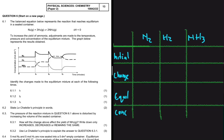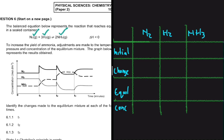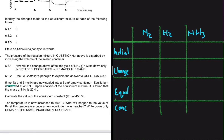We want to calculate Kc, the equilibrium constant, for a reaction between nitrogen gas and hydrogen gas to give us ammonia. The question reads: five moles of nitrogen gas and five moles of hydrogen gas are sealed in a five decimeter cubed empty container. Equilibrium is reached at 450 degrees Celsius. Upon analysis of the equilibrium mixture, it is found that the mass of ammonia is 20.4 grams. We need to find the value of the equilibrium constant.